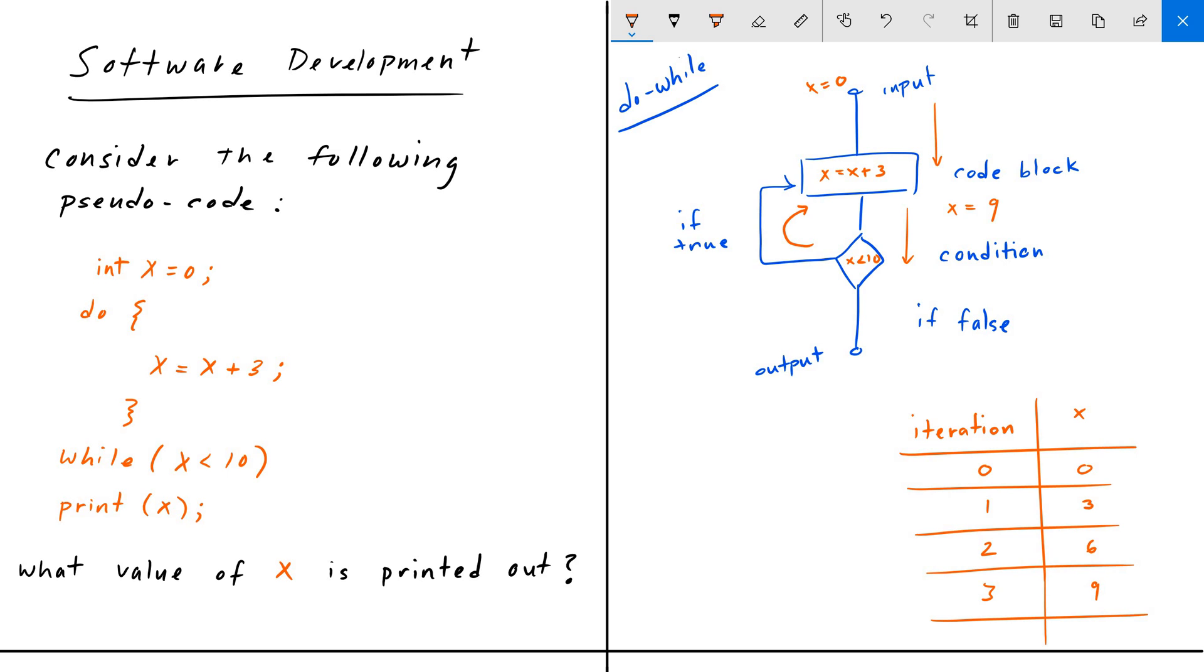And then we go back to the condition statement. Is nine less than 10? Yes, it is. Go back to the top, add another three to it, get X is equal to 12. And that is our fourth iteration.